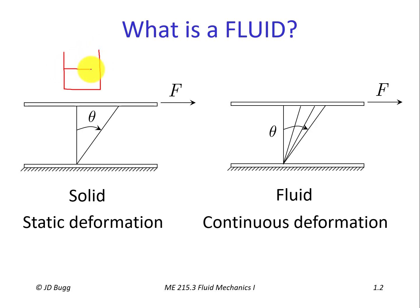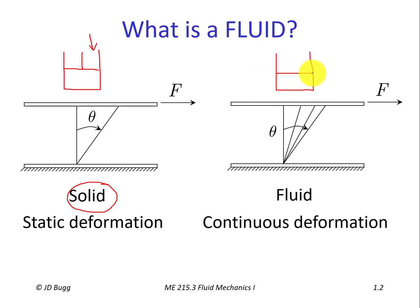Consider a piston-cylinder device — the kind we discussed in thermodynamics. If we place a solid inside and apply a compressive stress by pushing down on the piston, the solid undergoes a small static deformation — it reduces in volume a tiny bit — but it's a static deformation. If we do the same thing with a fluid, whether gas or liquid, the fluid also undergoes a static deformation: the piston moves down a little, but it is a static deformation. It doesn't need continuous deformation to withstand a compressive force. So for compressive forces, fluids and solids behave the same way.